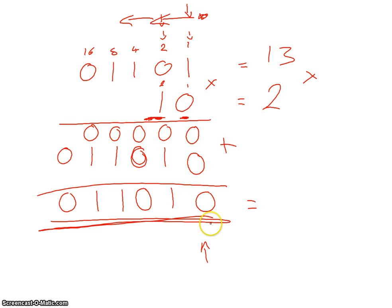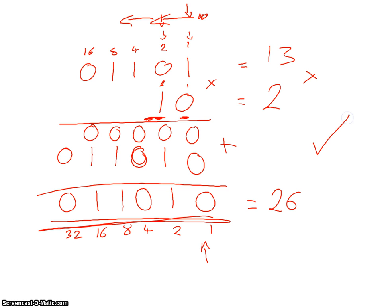For our result we have no ones, a two, no fours, an eight, a sixteen, and no thirty-twos. So sixteen plus eight is twenty-four, plus two is twenty-six. We can see that we've got that one right.